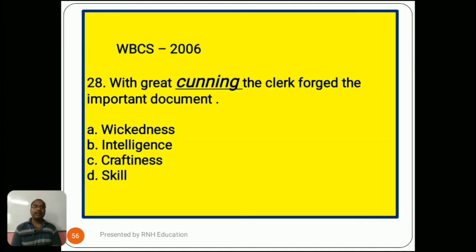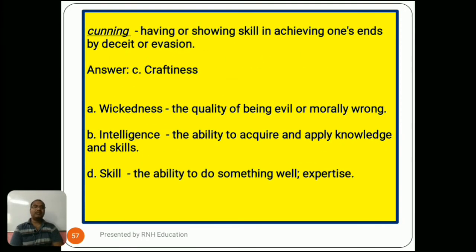Question number 28, from 2006: 'With great cunning, the clerk forged the important documents.' Options are A) wickedness, B) intelligence, C) craftiness, D) skill. Cunning means having or showing skill in achieving one's ends by deceit or evasion. The answer is C) craftiness. Option A, wickedness, means the quality of being evil or morally wrong. Option B, intelligence, means the ability to acquire and apply knowledge and skills. Option D, skill, means the ability to do something well, expertise.